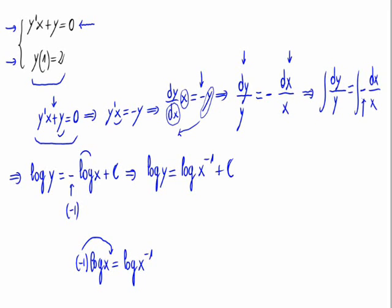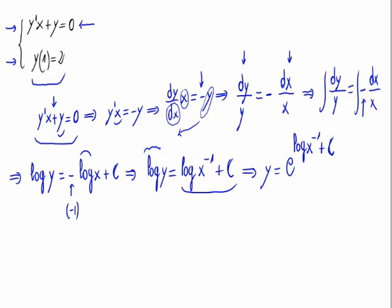If the logarithm of y is this we have here, y would be equal... The logarithm goes to the other part as exponential, so e raised to the logarithm of x raised to minus 1 plus c. Using the exponential properties, we would have e raised to the first term times e raised to the second one.